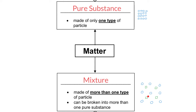I could separate the different particles in the mixture so that I can break it down into more than one pure substance. For example, water is a pure substance and salt is a pure substance. I can have a mixture of salt water, and I can boil that mixture so that all the water evaporates.